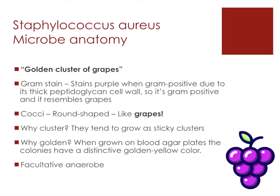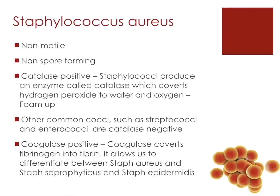Why the term golden? When it's grown on blood agar in particular, the colonies have a distinctive golden yellow colour. It's a facultative anaerobe, meaning it has the ability to live in both an aerobic and anaerobic environment. It's non-motile and non-spore forming, and it's catalase positive.